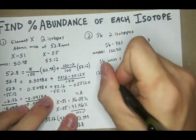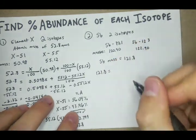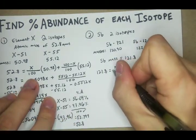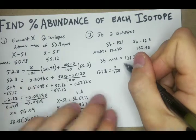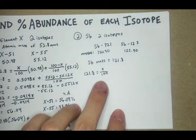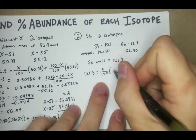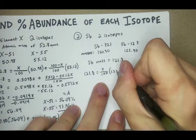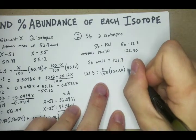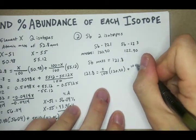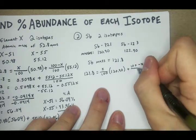We've got 121.8 equals X over 100 times whichever one we want.